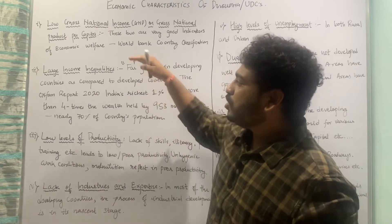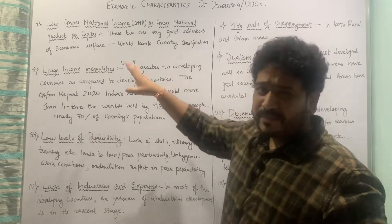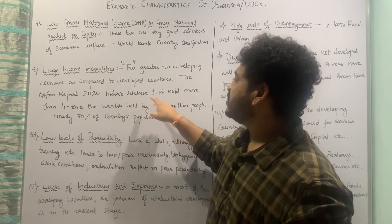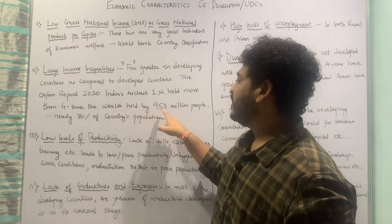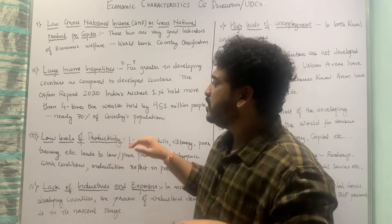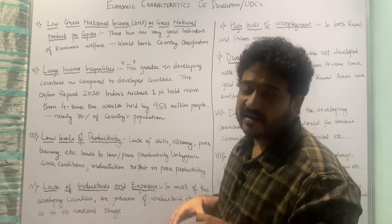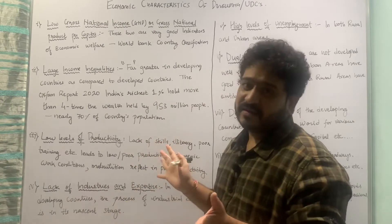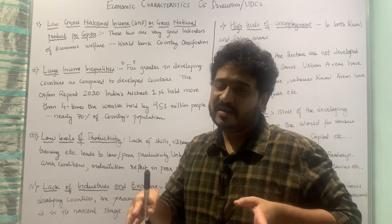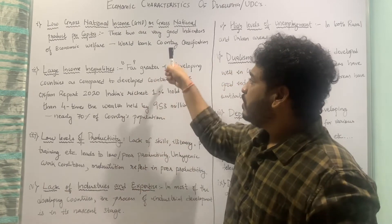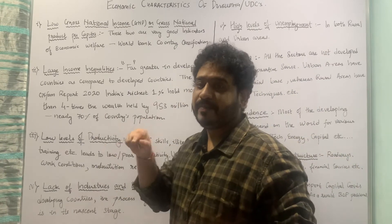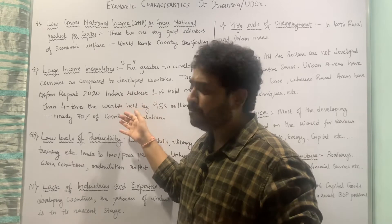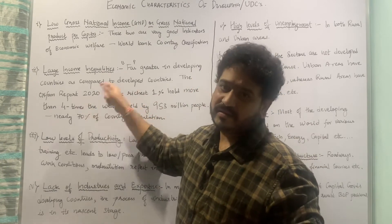The Oxfam report 2020 suggests that India's richest one percent hold more than four times the wealth held by 953 million people, who represent 70 percent of the populace. This reflects the income inequality in developing countries. Income inequalities are far greater in developing countries as compared to the developed world. I will share the link for the Oxfam report 2020 in the description.